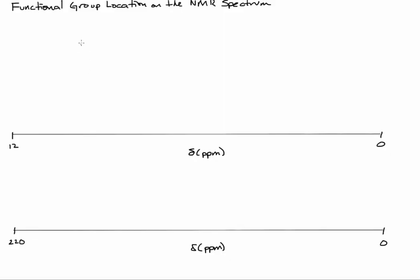This is a tutorial screencast on functional group location in the NMR spectrum. So we're going to look at proton NMR, which is abbreviated or shown as 1H, and carbon-13 NMR. So these are NMR active nuclei.